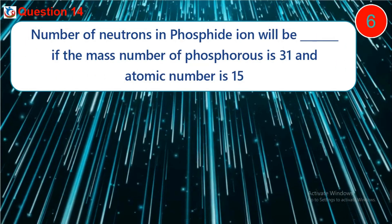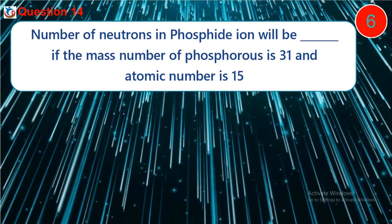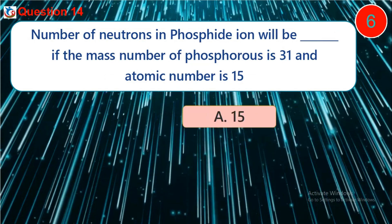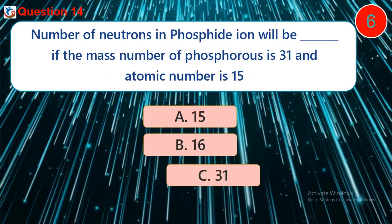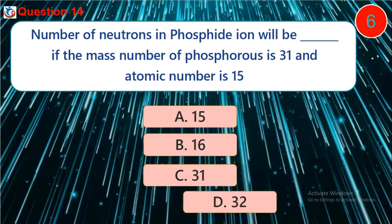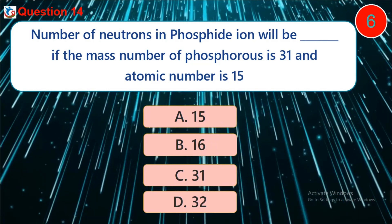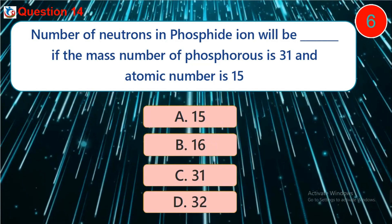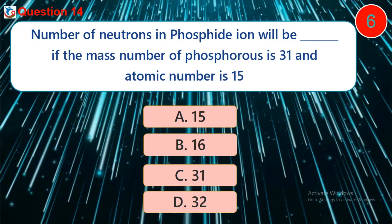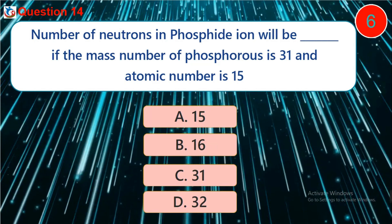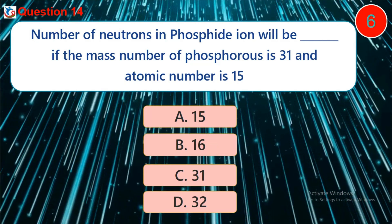Question fourteen: the number of neutrons in a phosphide ion will be dash, if the mass number of phosphorus is 31 and the atomic number is 15. A. 15, B. 16, C. 31, D. 32.